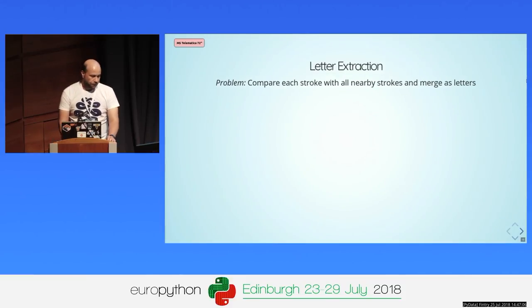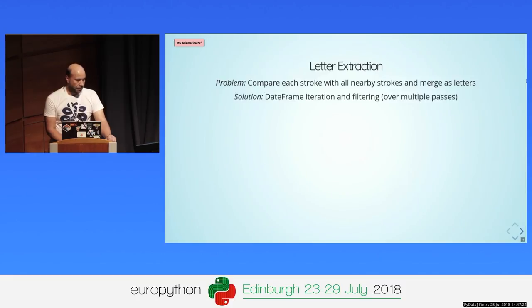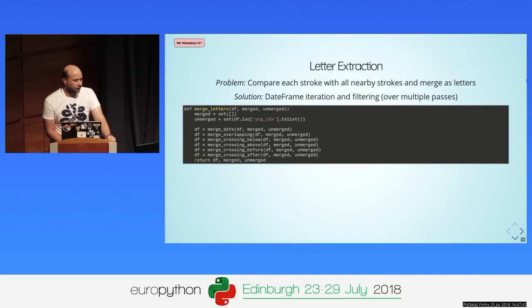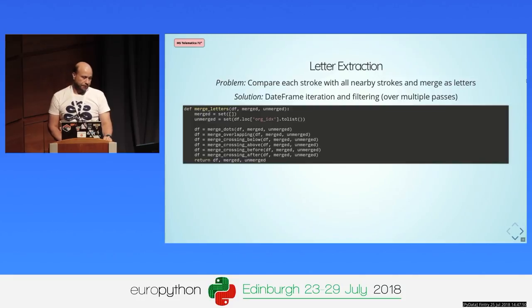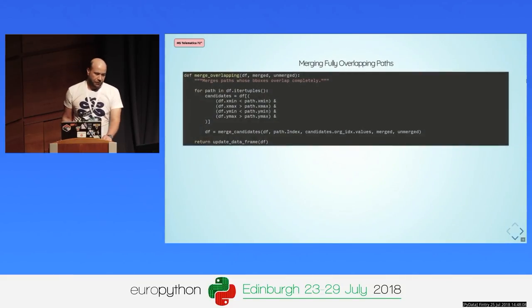Then, on to the letter extraction. The problem is quite computationally intensive if you address it naively. You need to compare each stroke with all nearby strokes which might have something to do with it, and merge them together as letters. What I found is that using a data frame with simple iteration and filtering — albeit over multiple passes — you can do that easily and quite quickly as well. The multiple passes are done by taking the data frame and returning it modified, along with two sets of indices: one for merged paths and one for yet unmerged paths. One of the steps is merging the fully overlapping paths.